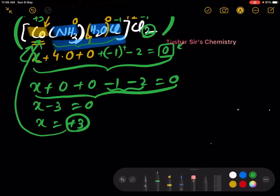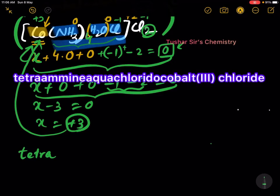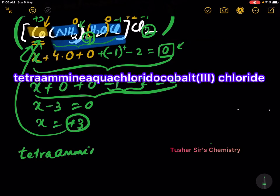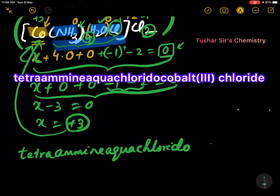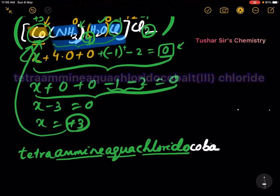Let us write. There are 4 ammonia molecules, so I write tetra — tetra for 4. For ammonia, it is tetramine. For water, it is aqua. For chlorine, it is chlorido. After writing the ligands, we have to write the central metal ion. Here, the central metal ion is cobalt.